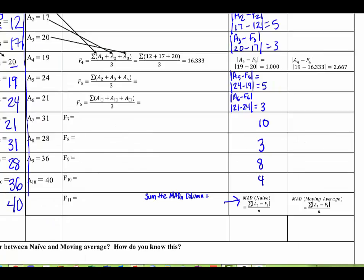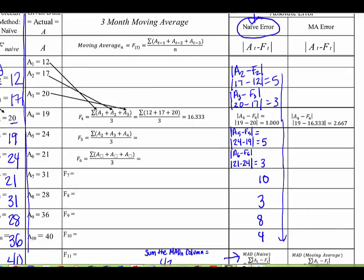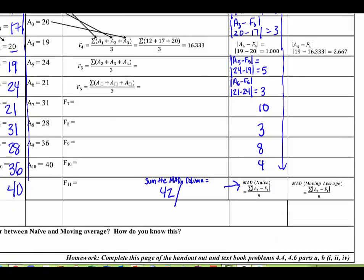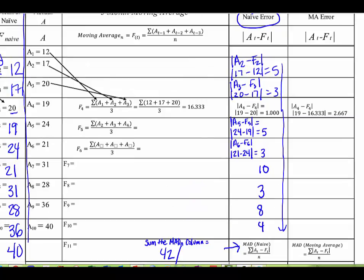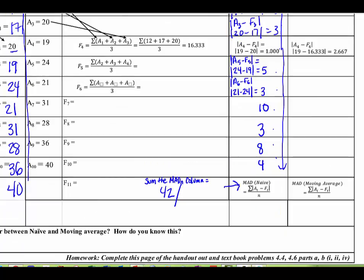When we sum the MAD column, we end up with 42 — that is the sum of 5 plus 3 plus 1 plus 5 plus 3 plus 10, all the way down to the bottom. Then we're going to divide that number by the number of observations, which is 9. So we divide 42 by 9, and we end up with a MAD of 4.667 for the naive model.